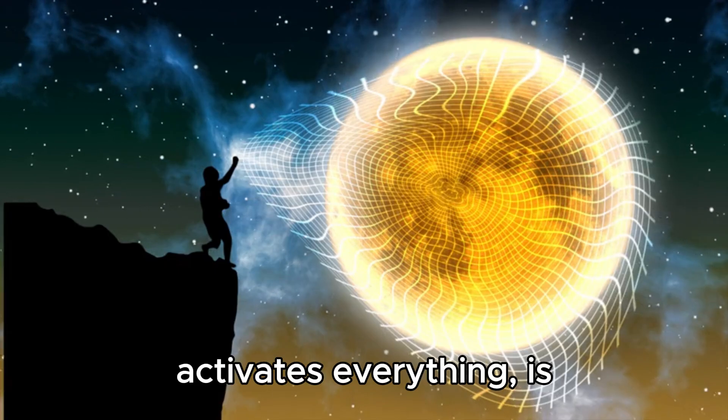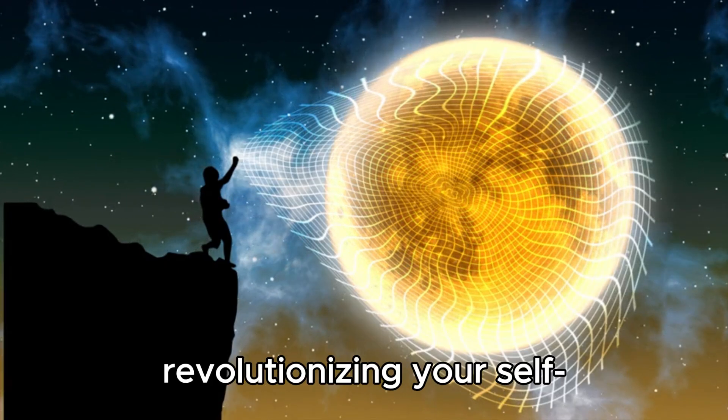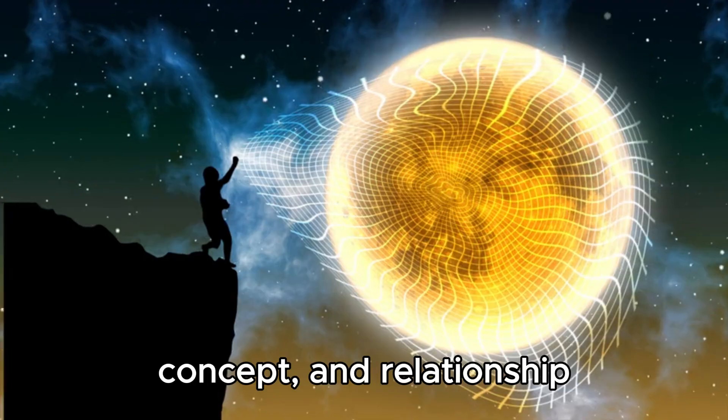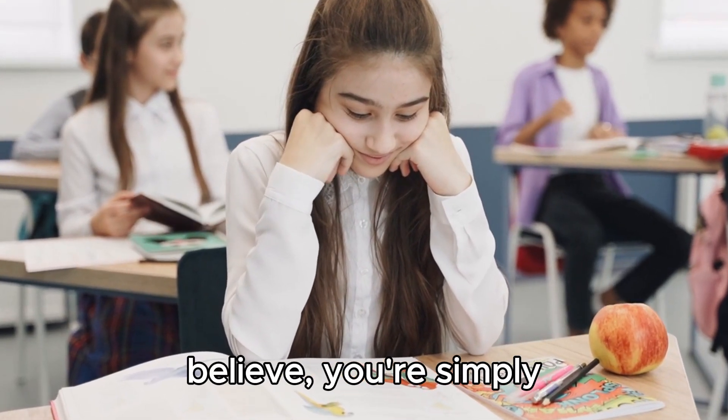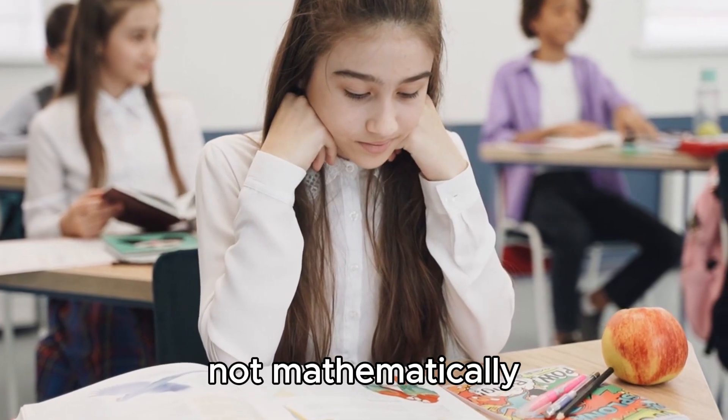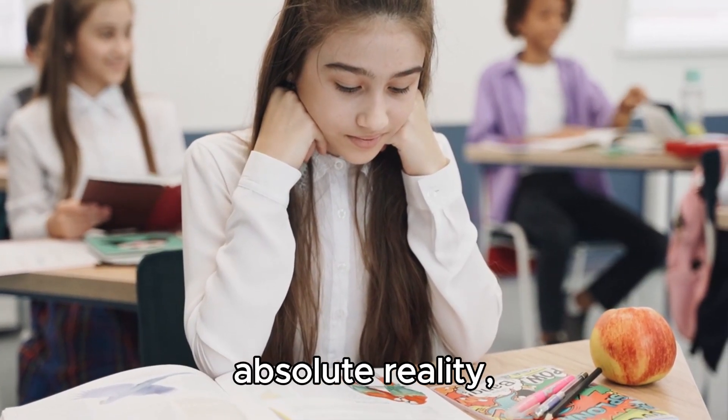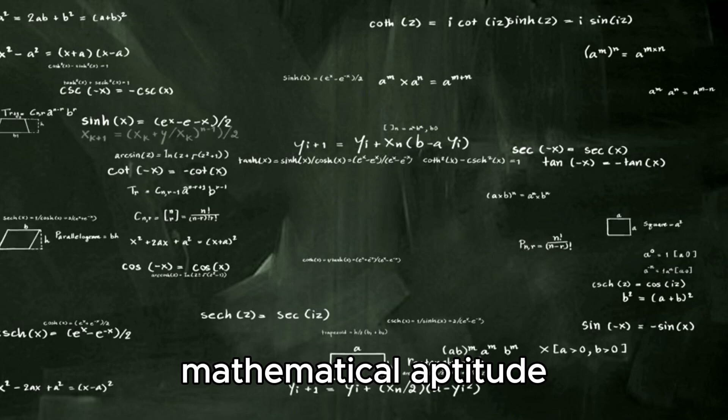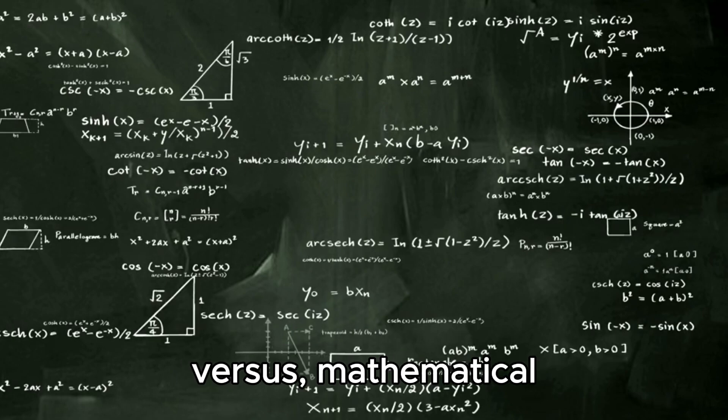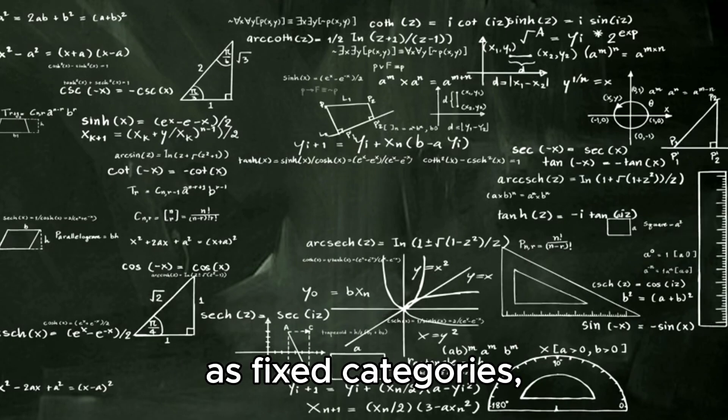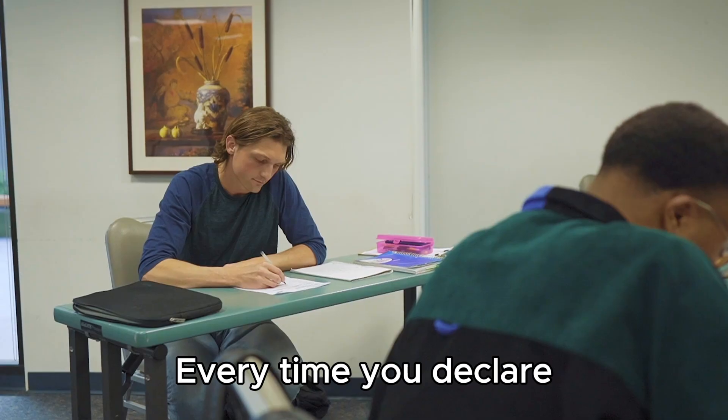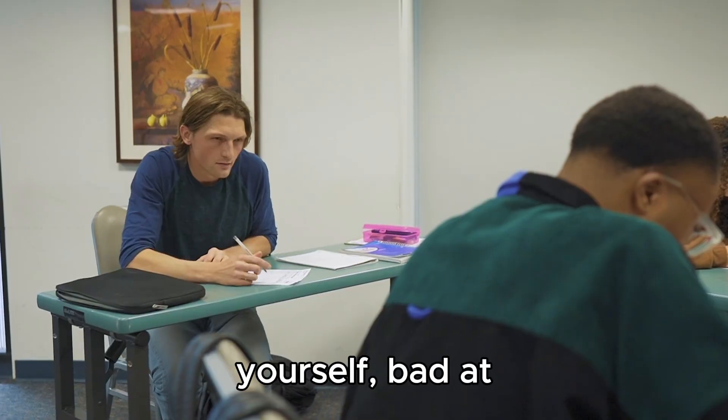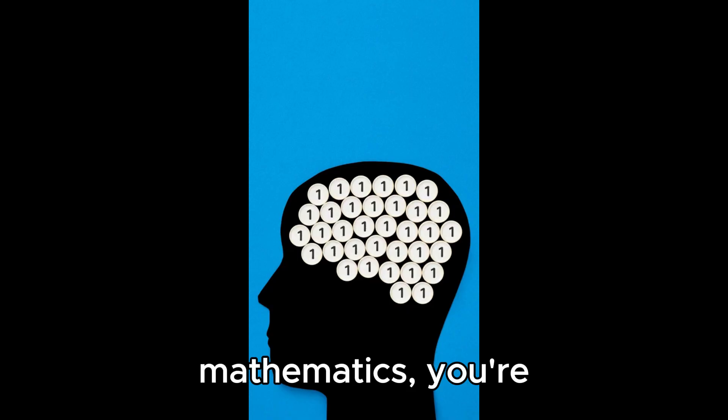The final element that activates everything is revolutionizing your self-concept and relationship with mathematics. Currently, you might believe you're simply not mathematically inclined, but here's the absolute reality. Mathematical aptitude versus mathematical inability doesn't exist as fixed categories. Only trained minds and untrained minds exist. Every time you declare yourself bad at mathematics, you're programming your brain to surrender more quickly.